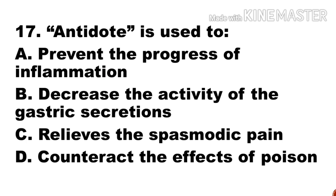Next question: Antidotes are used to — a) prevent the progress of inflammation, b) decrease the activities of gastric secretion, c) relieve spasmodic pain, d) counteract the effects of poison. Option d, counteract the effects of poison, is the right answer.